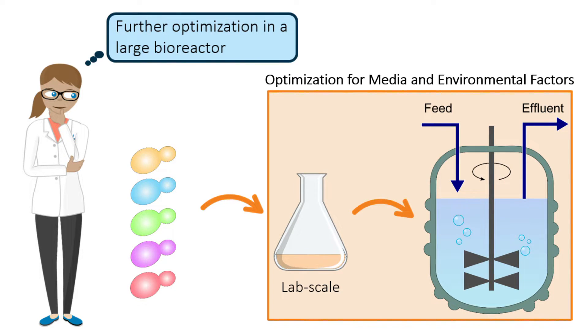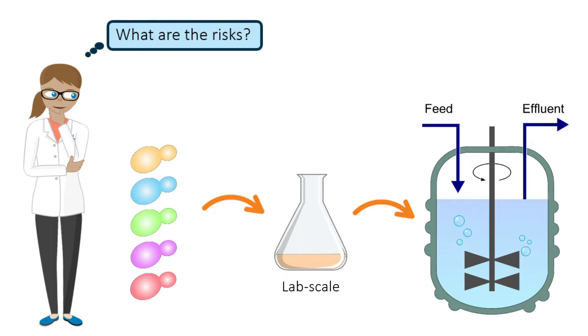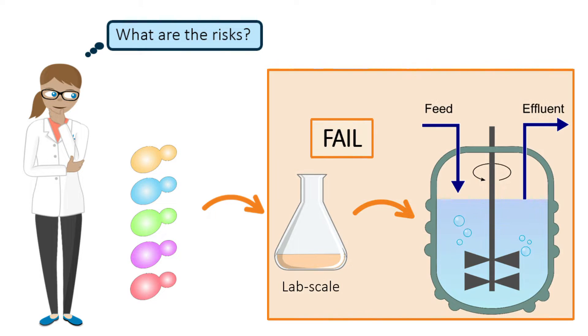In this step, environmental process factors and media components are considered and optimized to increase production titer. While this production pipeline could be successful, it is also high risk. If the strain fails to produce enough titer during this second step, Alex may have to start again from scratch and repeat the whole optimization cycle.